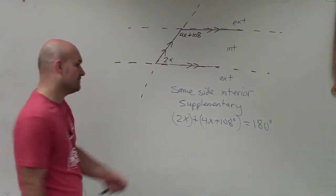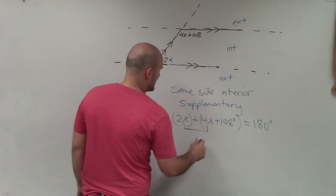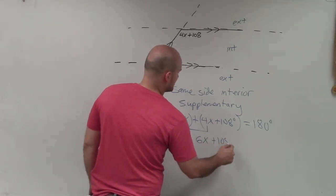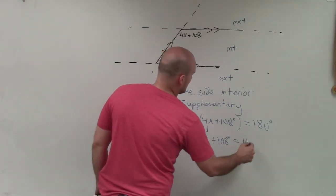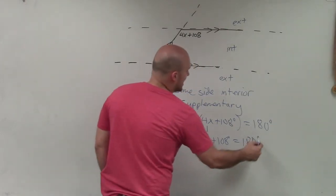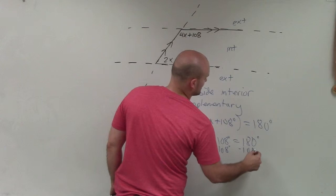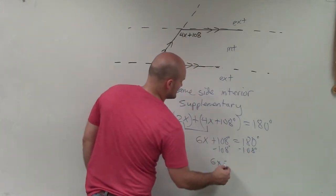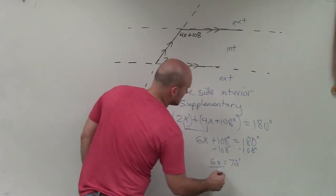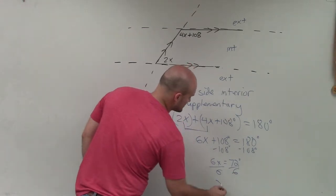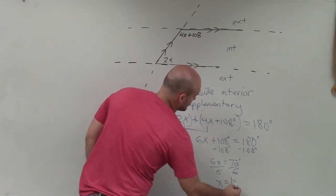So now, to go and solve that, I can combine like terms. So I have 6x plus 108 degrees equals 180. Now, it's a two-step equation. Subtract 108 and I get 6x is equal to 72 degrees. Divide by 6, divide by 6, x equals 12.